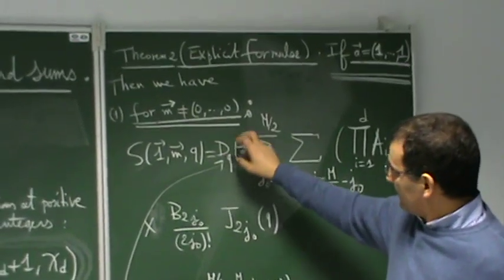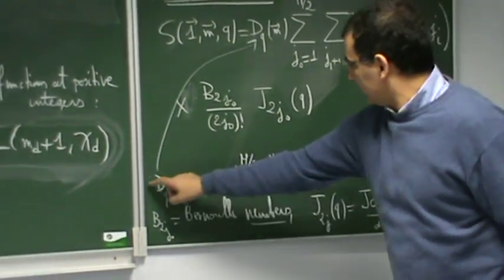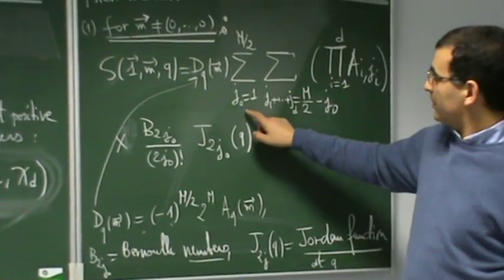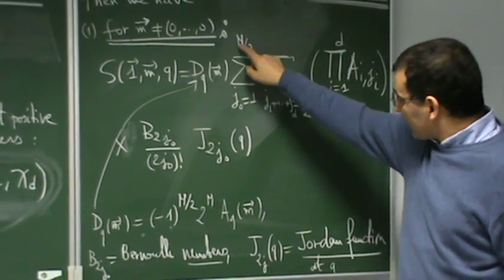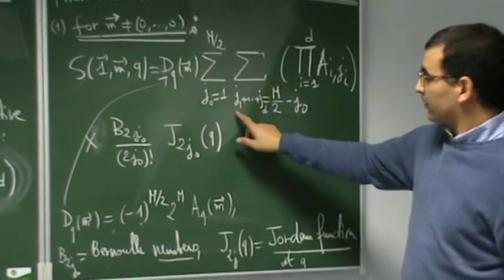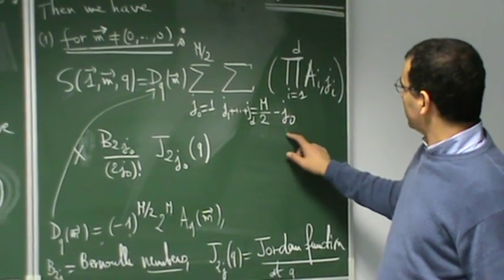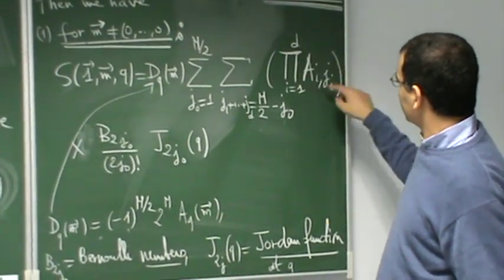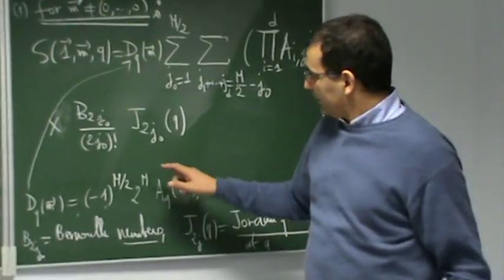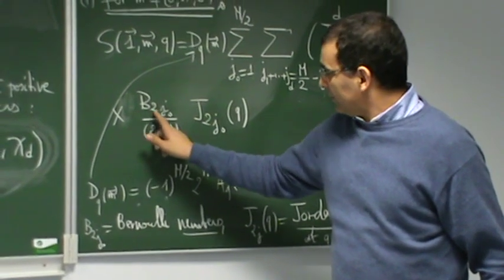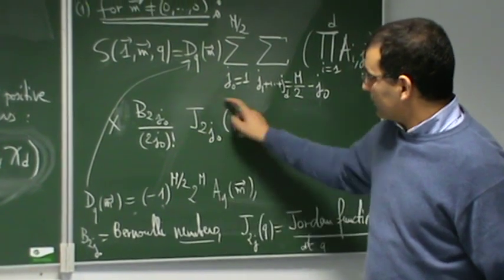It's the product of this term. This term is defined by this quantity here and the summation over all integers is zero from one to M over two and capital M over two and the summation here over all integer G1 to GT equal to capital M over two minus G0 and we have a product for some parameter here. I will define it later,